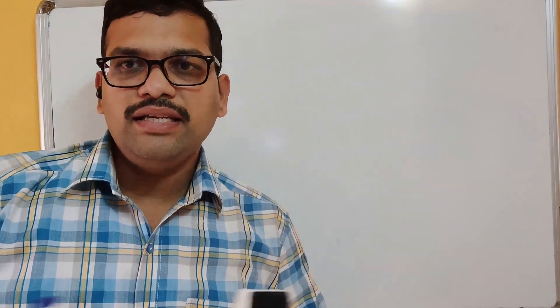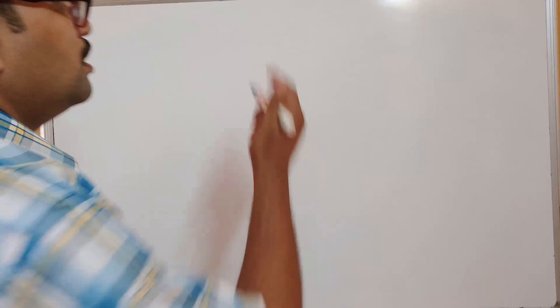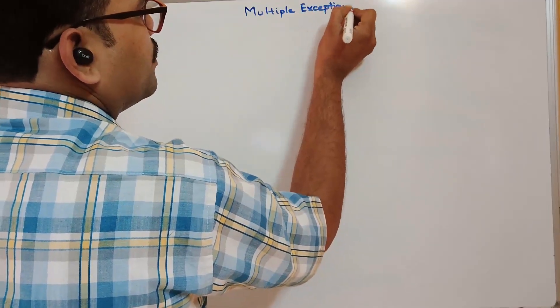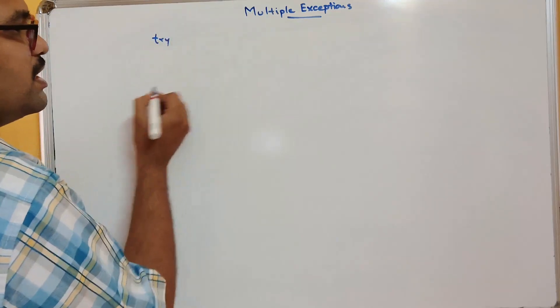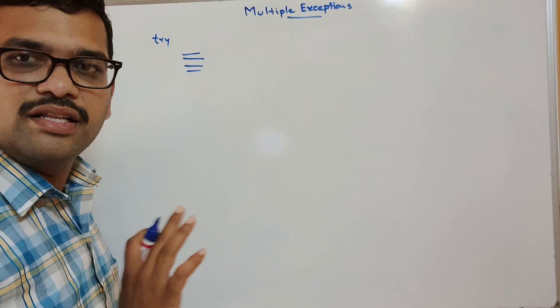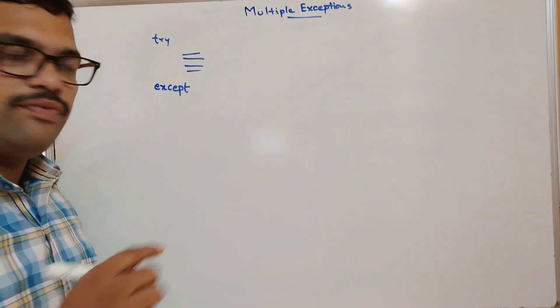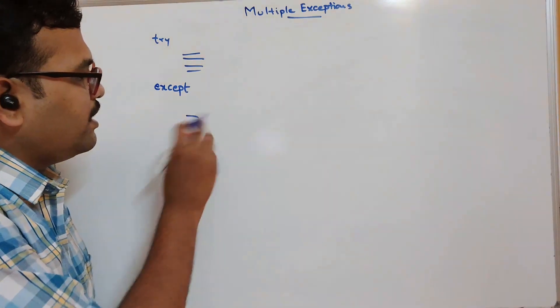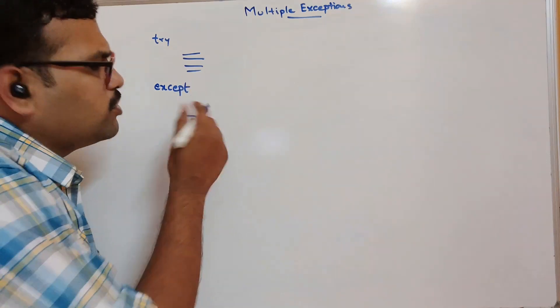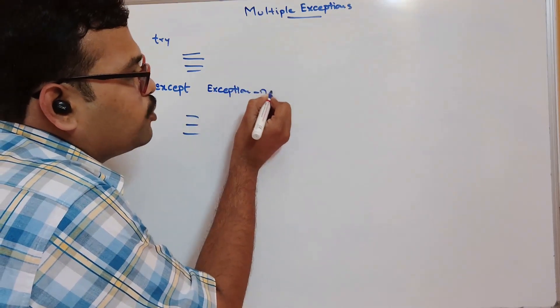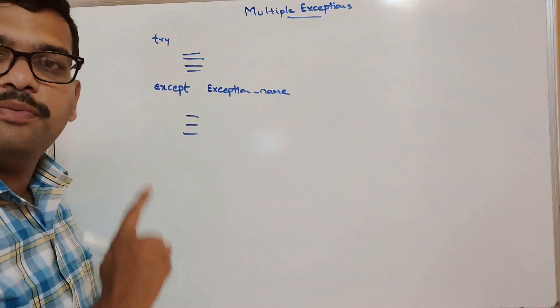Hello friends, welcome back to our channel. In the previous session we discussed how to handle single exceptions in Python, and in today's session we'll discuss how to handle multiple exceptions in Python. In the previous session we discussed the different blocks: in the try block we write instructions from which we expect exceptions, and whatever exception is raised in the try block is handled by the except block. We can handle exceptions by writing directly or by specifying the exception name.